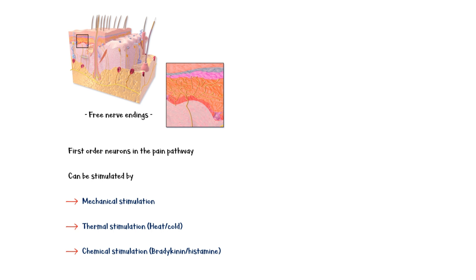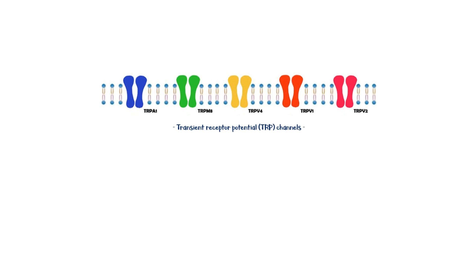Pain is sensed by receptors called free nerve endings, which are the first-order neurons in the pain pathway. These neurons can be stimulated in several ways: by mechanical stimulation, thermal stimulation such as heat and cold, and chemical stimulation by molecules like bradykinin and histamine. These stimuli trigger the opening of transient receptor potential channels on the membrane of free nerve endings.